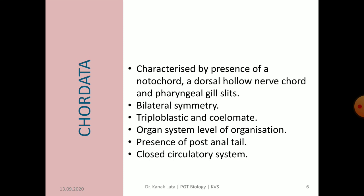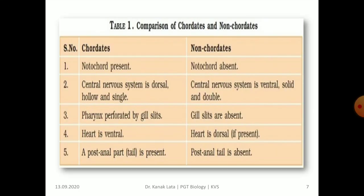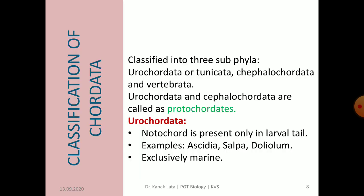Here is a table that shows comparison of chordates and non-chordates. In chordates, notochord is present, whereas in non-chordates, notochord is absent. In chordates, central nervous system is dorsal, hollow and single, whereas in non-chordates, central nervous system is ventral, solid and double. In chordates, pharynx is perforated by gill slits, whereas in non-chordates, gill slits are absent. In chordates, heart is ventral, whereas in non-chordates, heart is dorsal, if present. In chordates, a post-anal tail is present, whereas post-anal tail is absent in non-chordates.